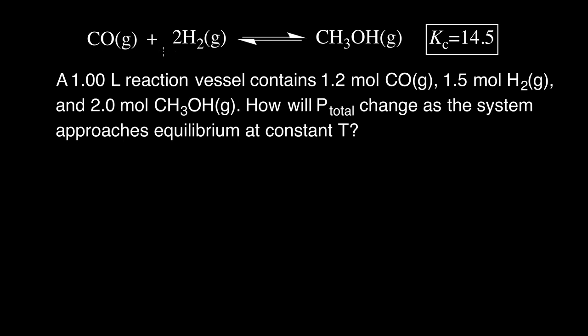So our carbon monoxide is reacting with our hydrogen in a 1 to 2 ratio to give us methanol, and this reaction is reversible. We also know the equilibrium constant for this reaction is 14.5 at some temperature, and we know that the temperature is staying constant.